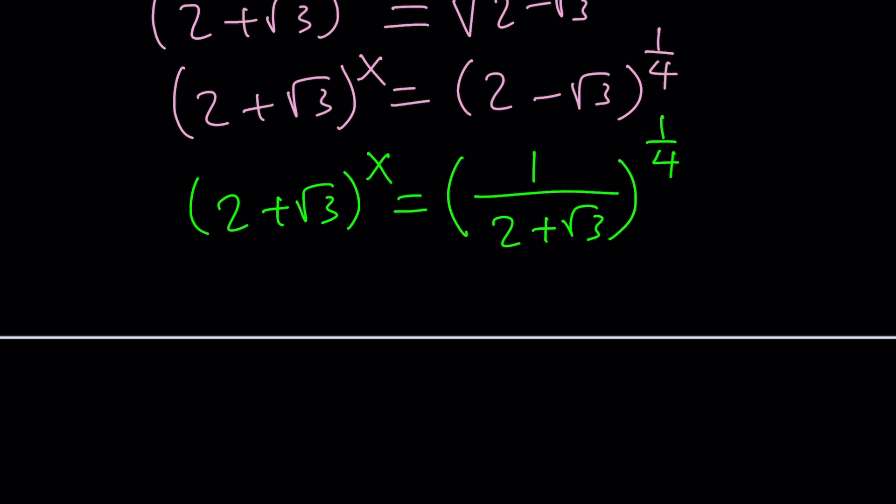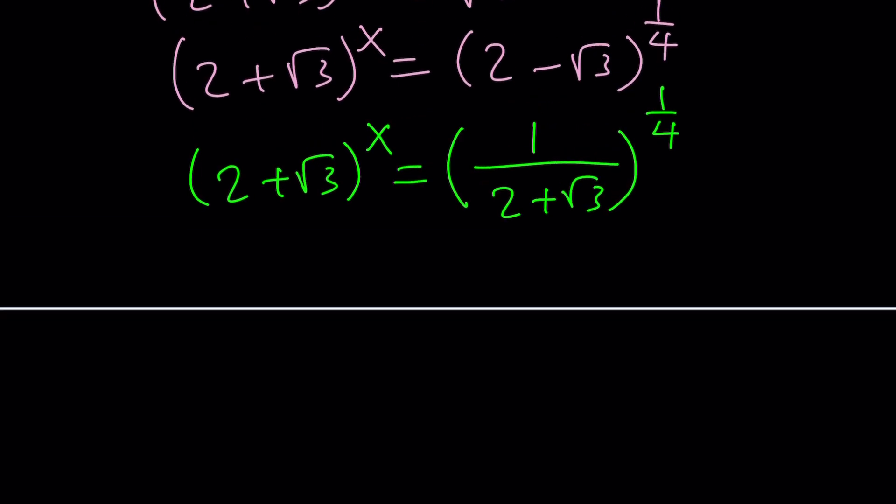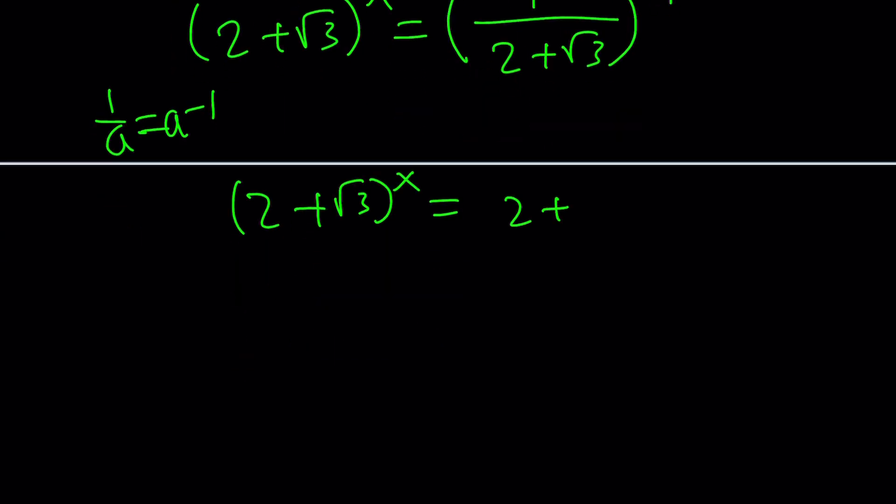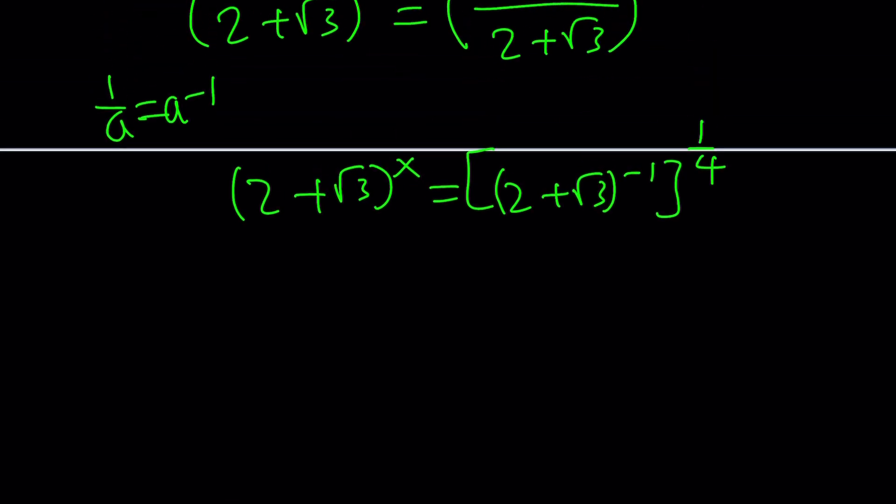Now, what do you do? You use the negative exponent rule. 1 over something, like 1 over a, is a to the power negative 1. Great. So, now we can write this as (2 plus root 3) to the power negative 1 to the power one-fourth. How nice. We have two powers, superpowers, multiply them, right? You get (2 plus root 3) to the power x equals (2 plus root 3) is the base to the power negative 1 times one-fourth, which is negative one-fourth.